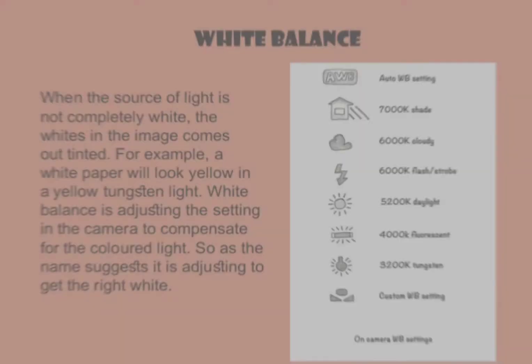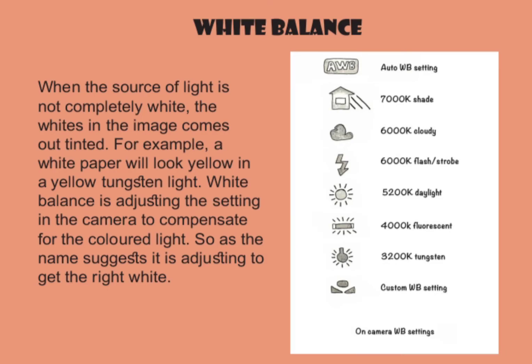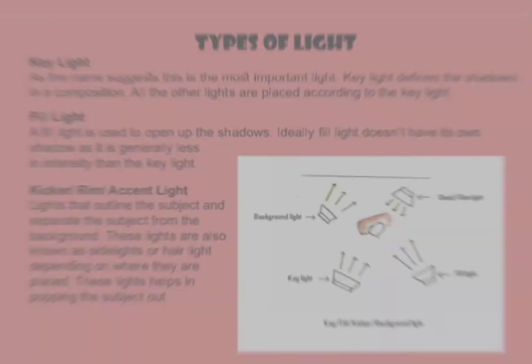White balance: when the source of light is not completely white, the whites in the image come out tinted. For example, a white paper will look yellow under yellow tungsten light. White balance is adjusting the setting in the camera to compensate for the color of light — as the name suggests, it is adjusting to get the right white. This is an image of the white balance settings.